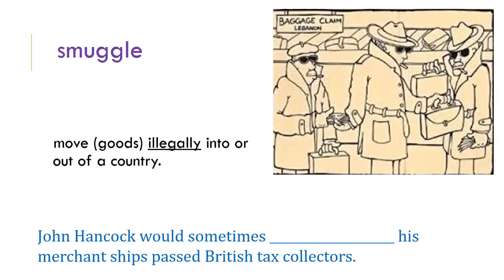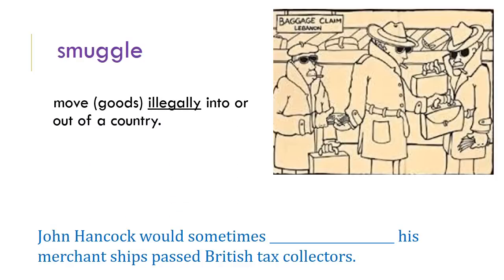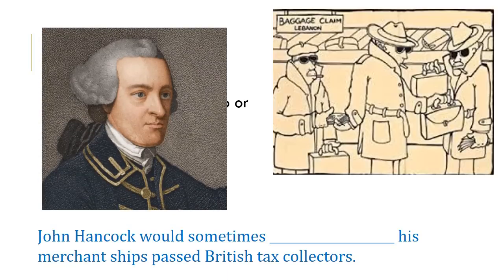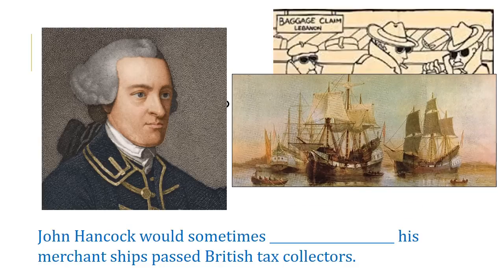Your next word is smuggle. Smuggle means to move goods illegally into or out of a country. John Hancock would sometimes smuggle his merchant ships past British tax collectors, mainly to avoid the tax. He did not want to spend extra money just to do his normal business, because he felt he was being punished by the British government, along with all the colonists.